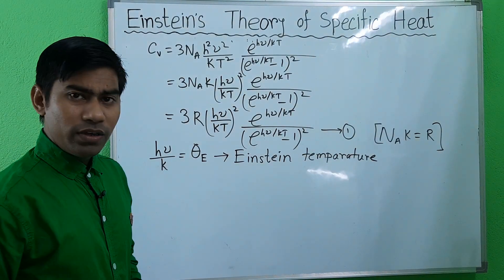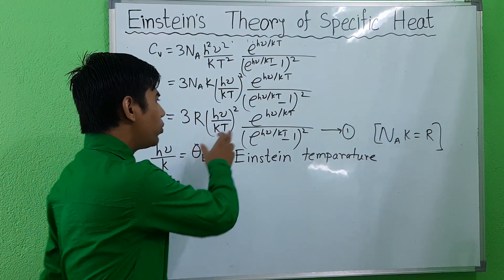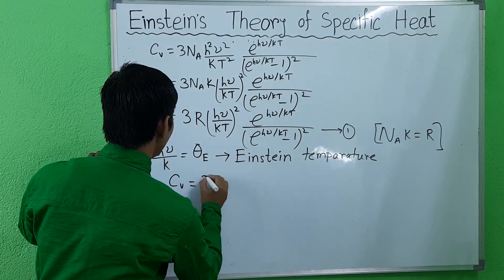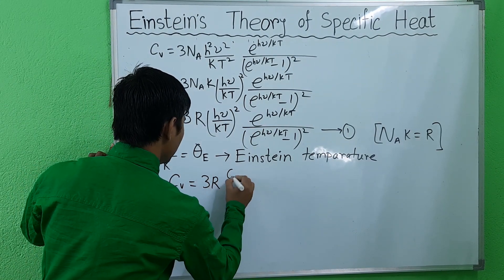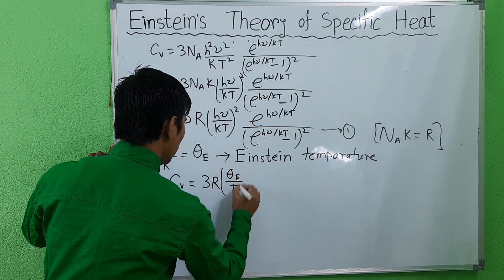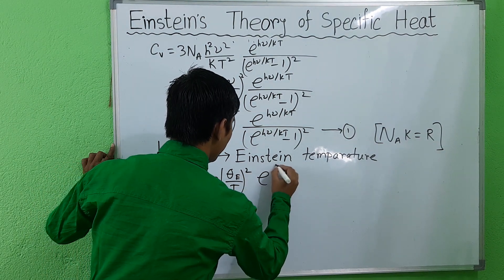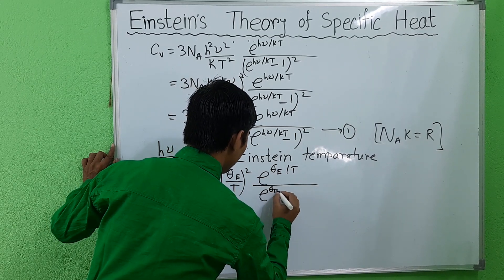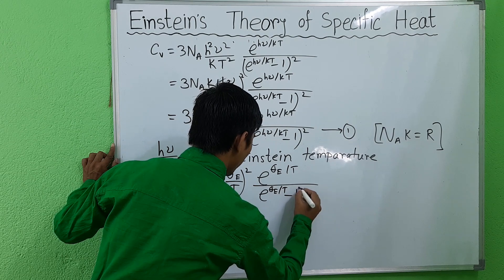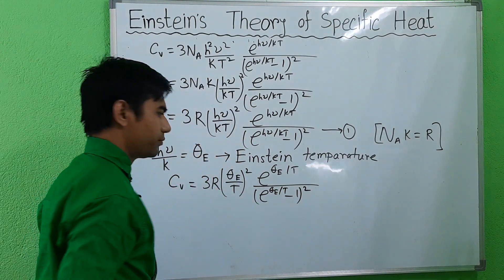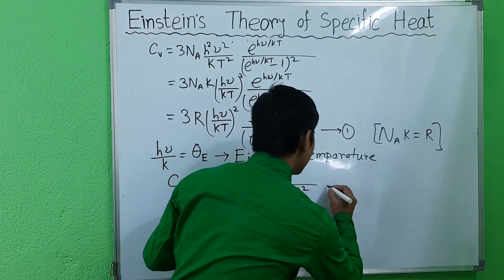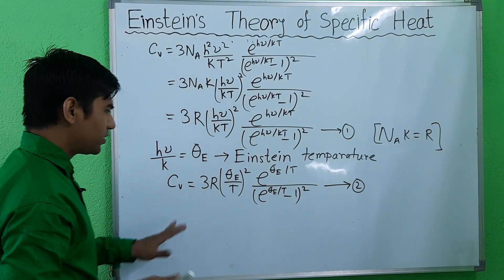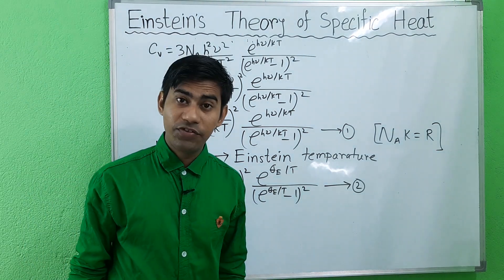Using this substitution, equation 1 can be written as C_V = 3R × (θ_E/T)² × e^(θ_E/T) / (e^(θ_E/T) − 1)². Suppose this is equation 2. This is the value of the molar specific heat of a solid.